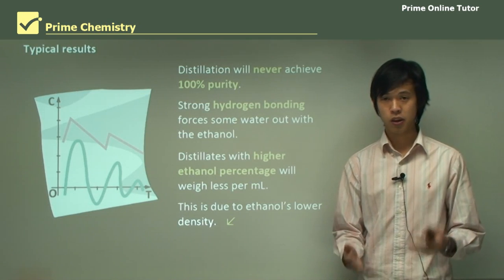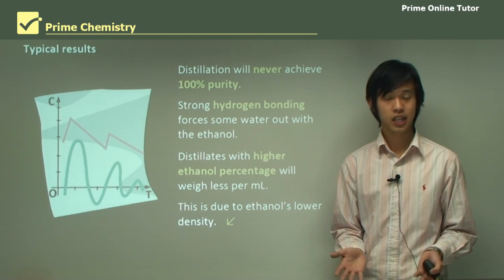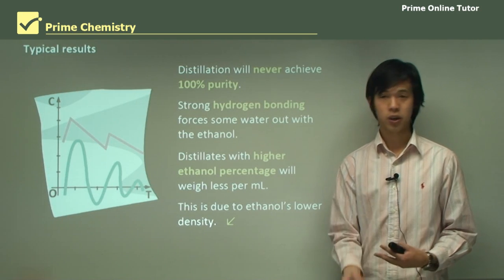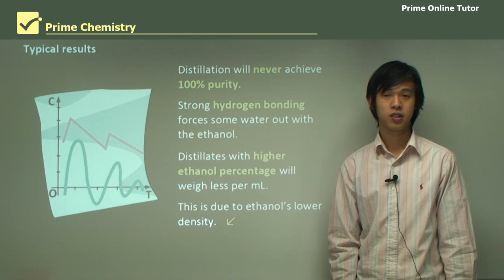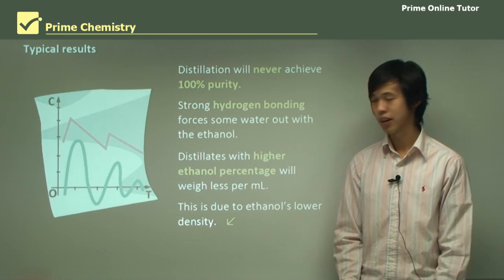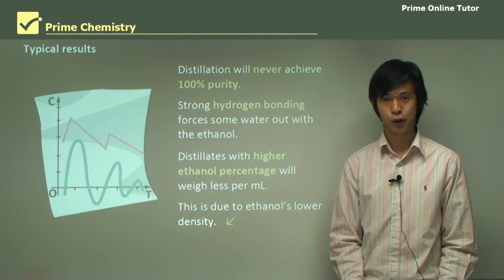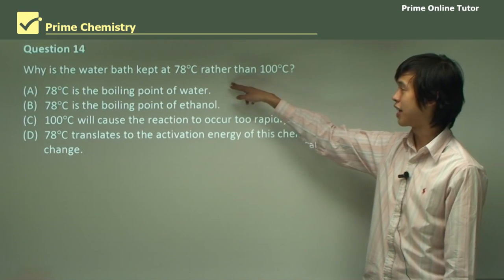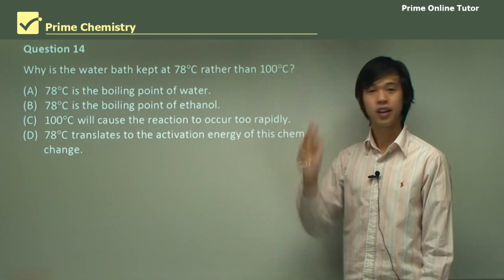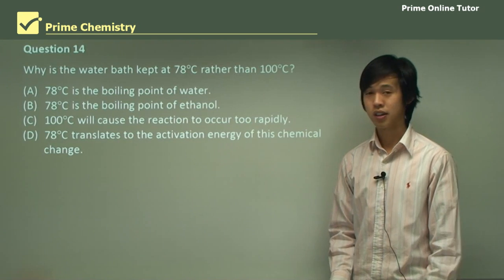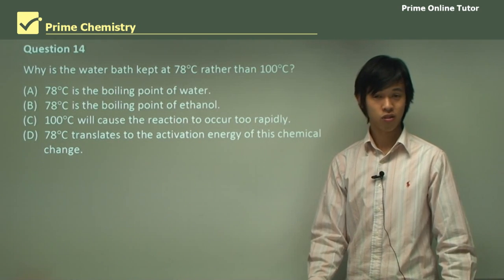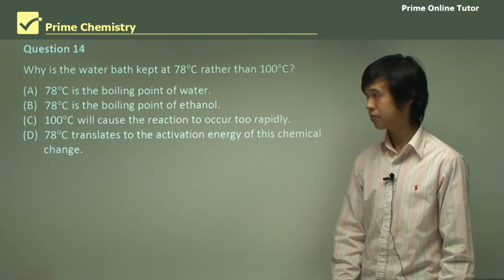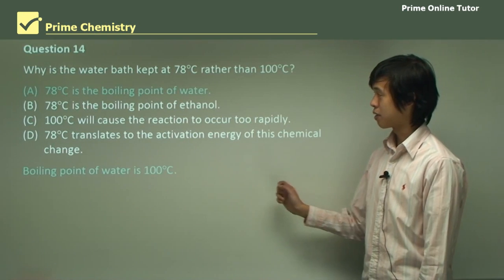And so we spoke about what we're actually doing in the distillation process and why we want to do it. So we'll move on to the question segment, and some of these questions that I brought up earlier hopefully will be answered for you. So firstly, why is the water bath kept at 78 degrees rather than 100 degrees? A legitimate question, because shouldn't 100 degrees give you more energy? So it should go faster?